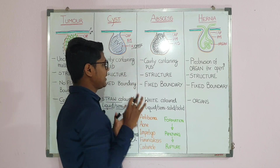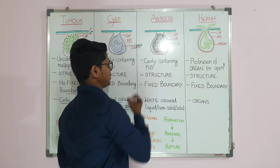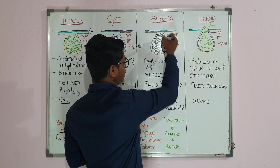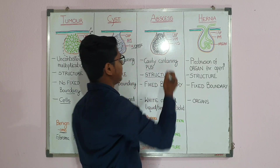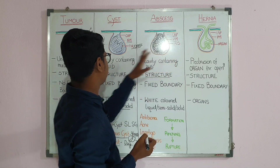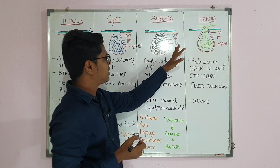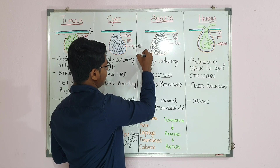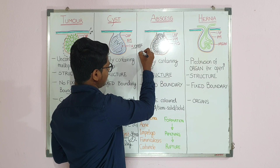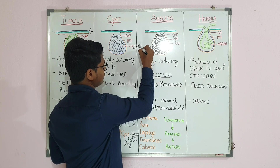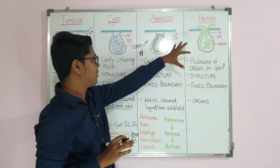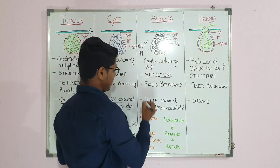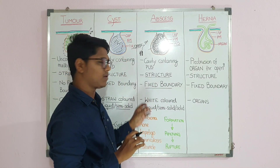Now coming to abscess — an abscess is basically a cavity containing pus. Pus is nothing but dead polymorphonuclear cells, usually neutrophils. The structure has an outer capsule or skin, and next you will find the pyogenic membrane. If you take a histological section, there will be a layer showing degenerative changes — this layer is named the pyogenic membrane. It does not mean the pyogenic membrane secretes pus. The content will be pus, with a fixed boundary.